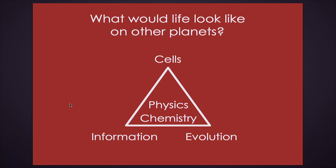Life on earth is built around the idea of information. A cell is actually an object constructed from a recipe written on a molecule called DNA. The idea of separating the object from the information is something that maybe is a nice way to organize things. A mountain is not based on information — the ocean, rivers, natural objects that are not living don't separate their information from their basic structure, but somehow life does that.